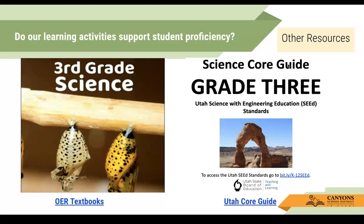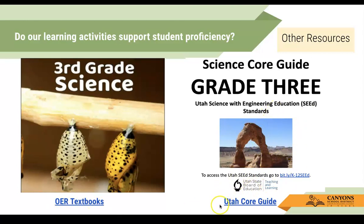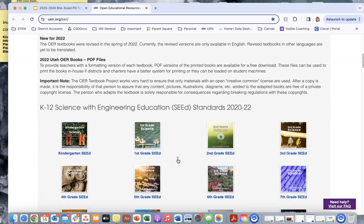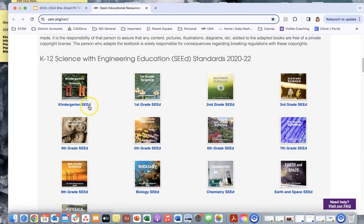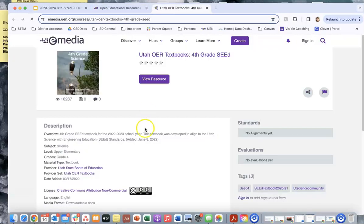Other resources include OER textbooks and the core guide. I've given you links — the OER textbooks are available for all grades K-5. If you scroll down you'll see the different pieces of text: kindergarten, first, second — the workbooks and presentation slides that were district-created were built around these. This is a resource where you can find different informational text and different phenomena for your students. I'm going to click on the fourth-grade one to show you the OER textbook.